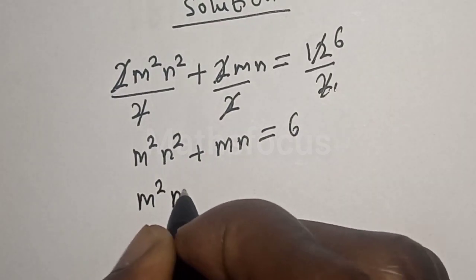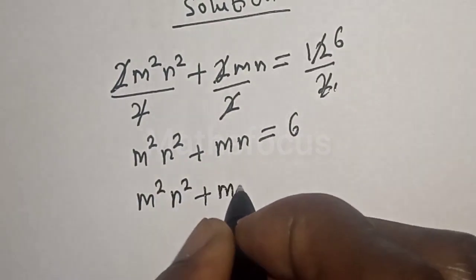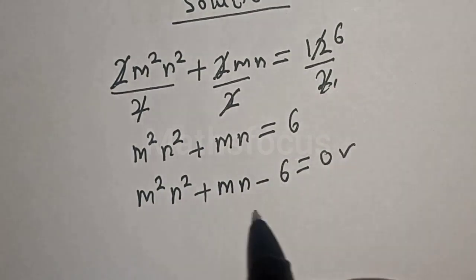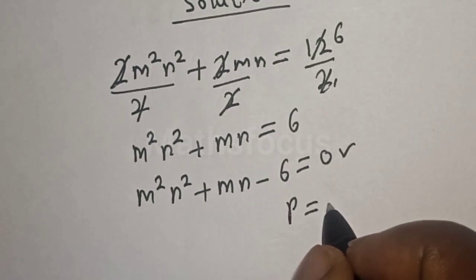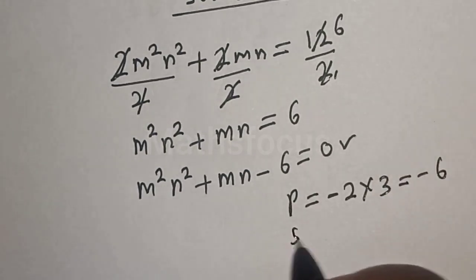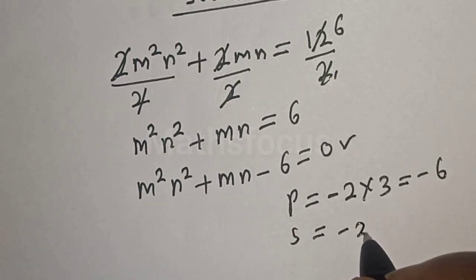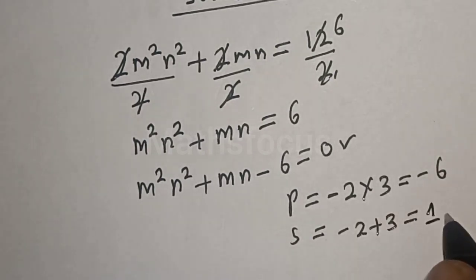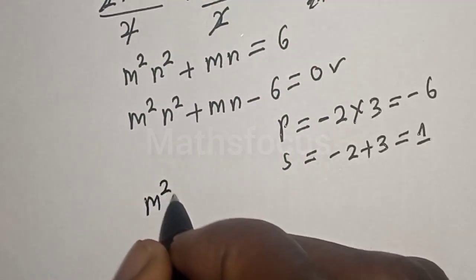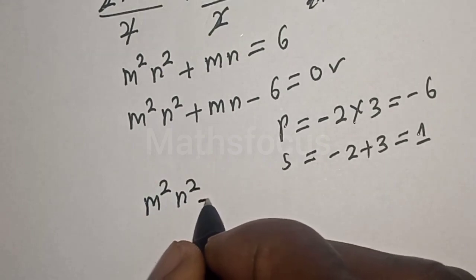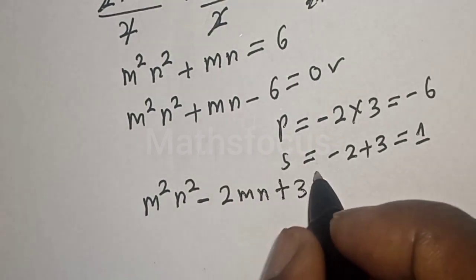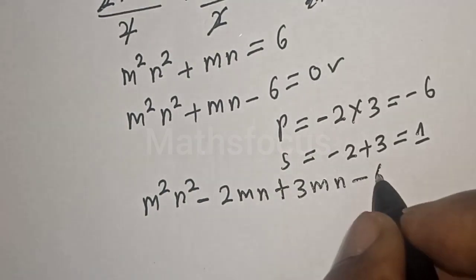Rearranging, we have m²n² + mn - 6 = 0. This is a quadratic equation. We use the factorization method: we need two numbers with a product of -6 and a sum of 1, which are -2 and +3. So we write: m²n² - 2mn + 3mn - 6 = 0.